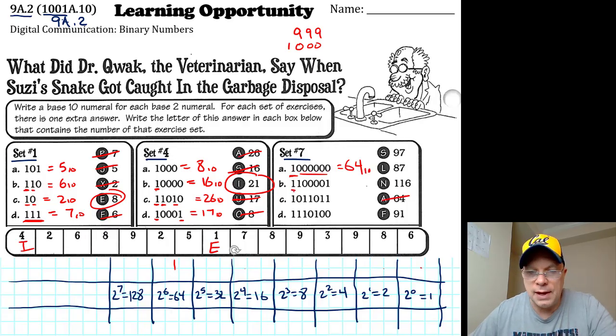Here I have a sixty-four and a thirty-two and nothing else except for a one. So sixty-four and thirty-two is ninety-six, plus one is ninety-seven.